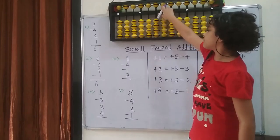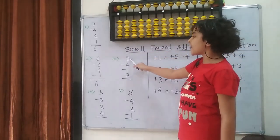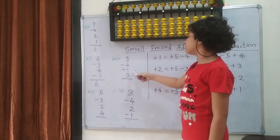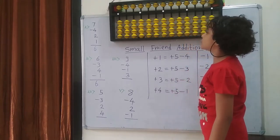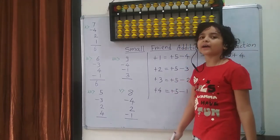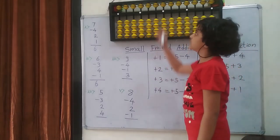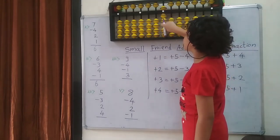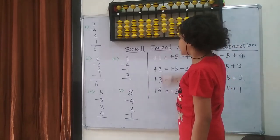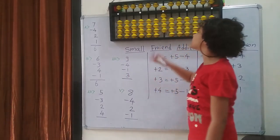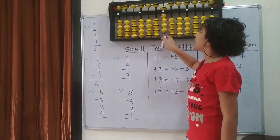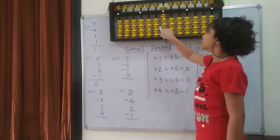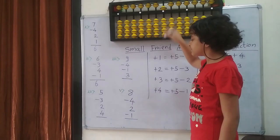Next question: 9 minus 4 minus 1 plus 3. So first on the backwards, I am going to put 9 — 5, 6, 7, 8 and 9. Then I am going to minus 4. We can do it directly because we have the bits. So 1, 2, 3, 4.